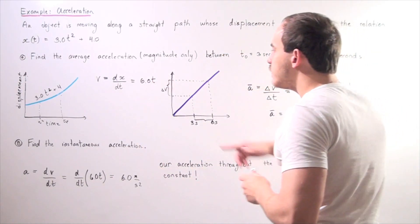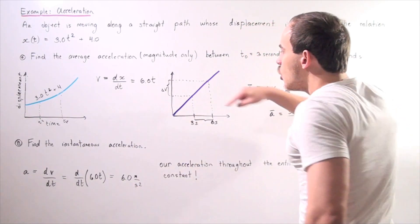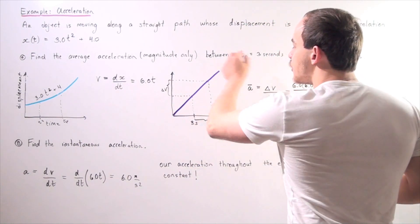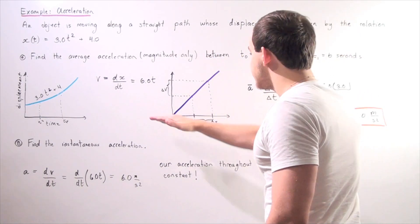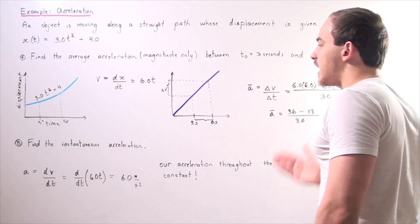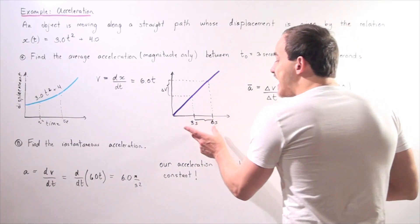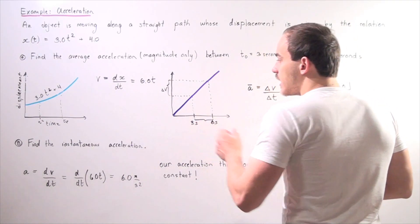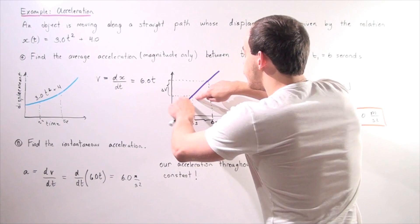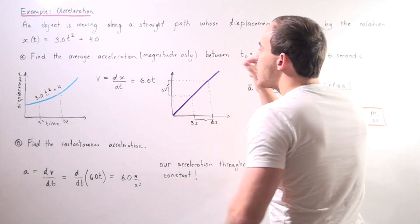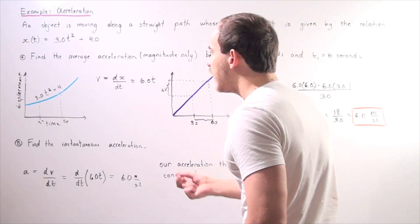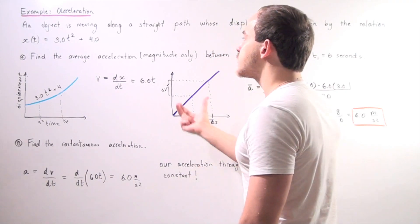So now if we graph this function, we get a straight line with a slope of 6. We have the y-axis as our velocity and the x-axis as our time. If we take this time interval and find the corresponding values and find the slope between these two points, that will give us our value of our average acceleration.